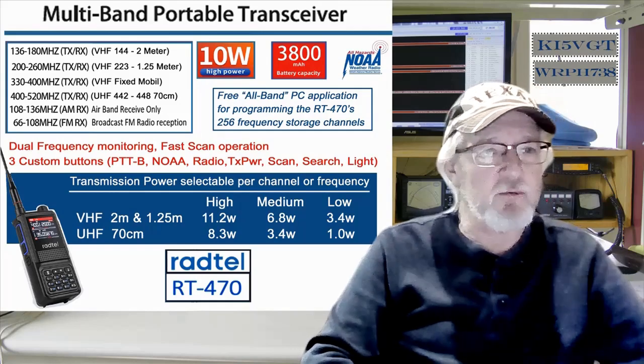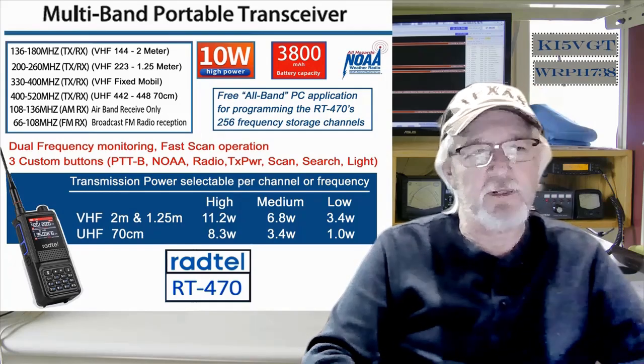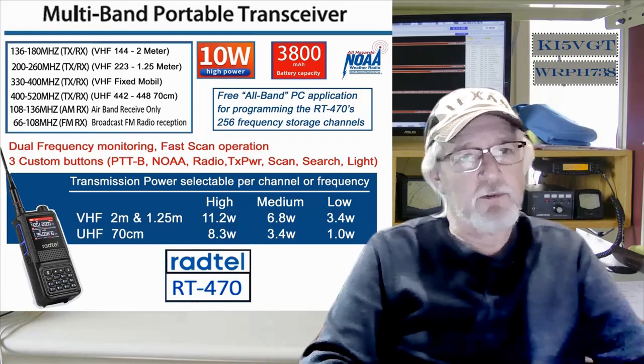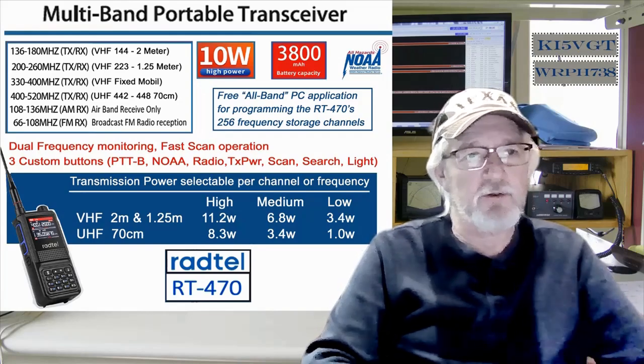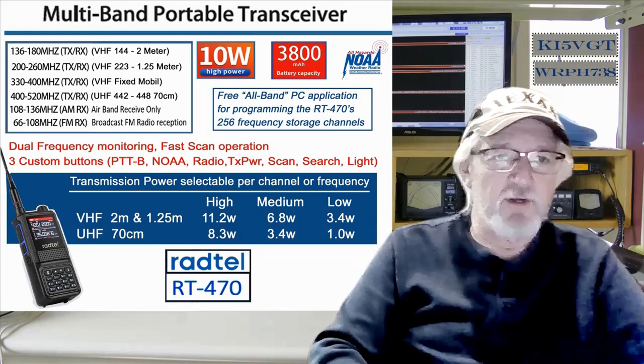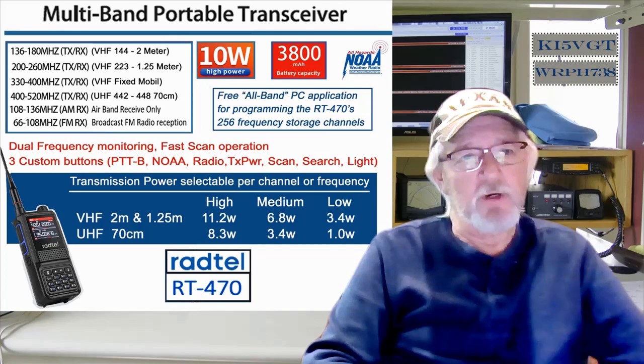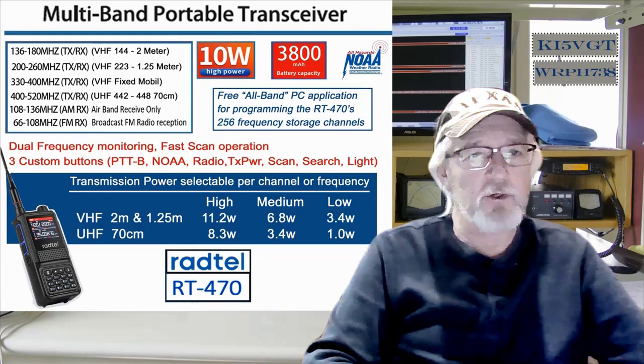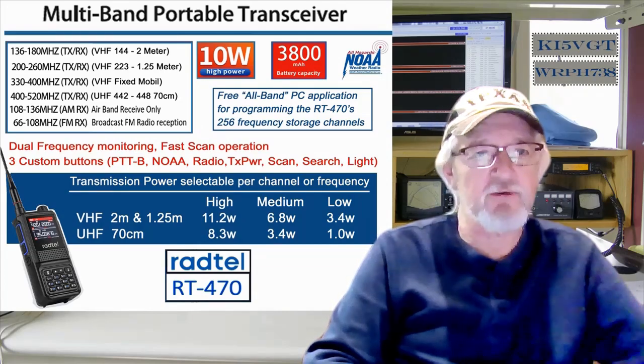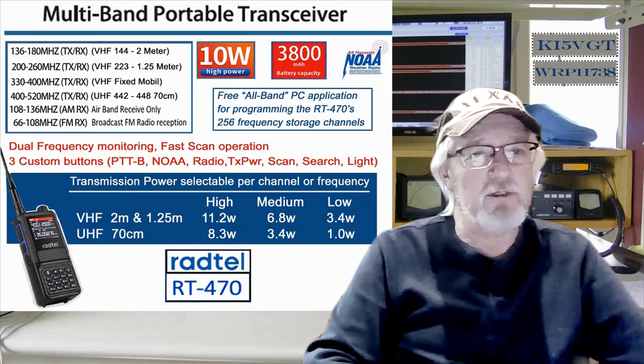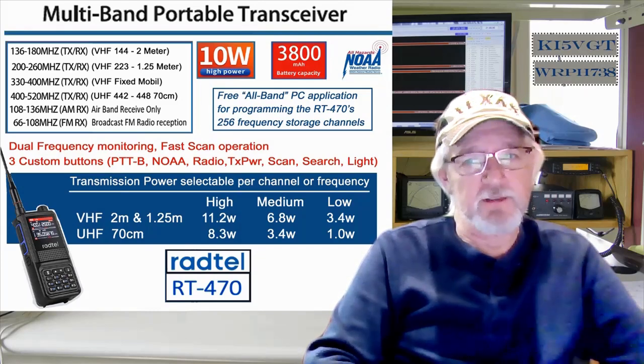This is a six-band radio. VHF 144 and 2 meter, that's 136 to 180. VHF 223 and 1.25 meter, 200 to 260 megahertz. VHF fixed mobile, that's the 330 to 400 megahertz. UHF 442 to 448, that's 70 centimeter. Airband receive only, and then broadcast FM radio.